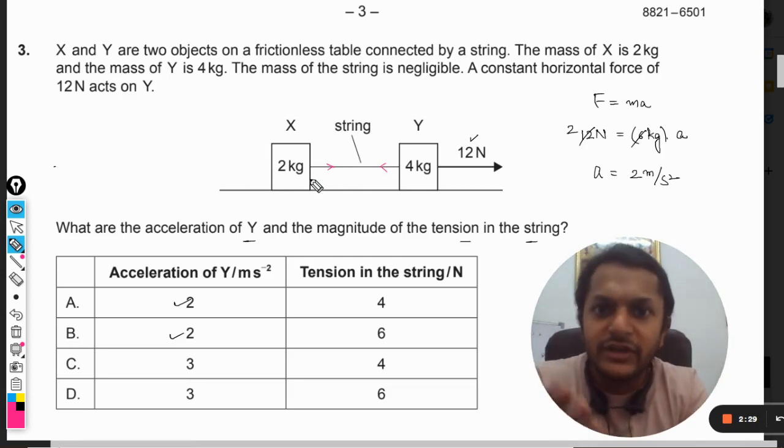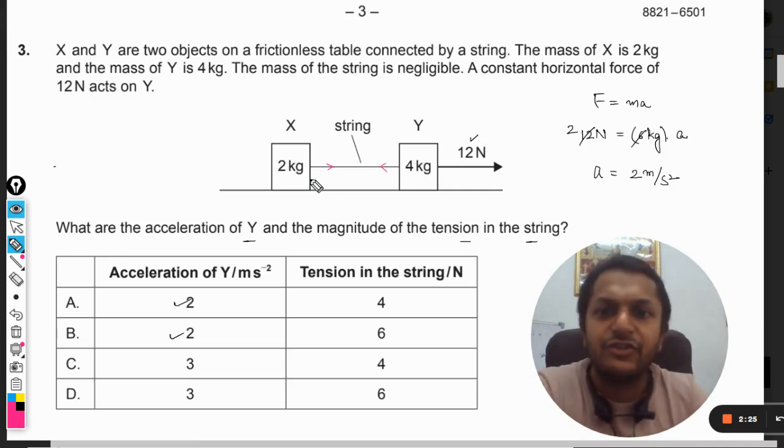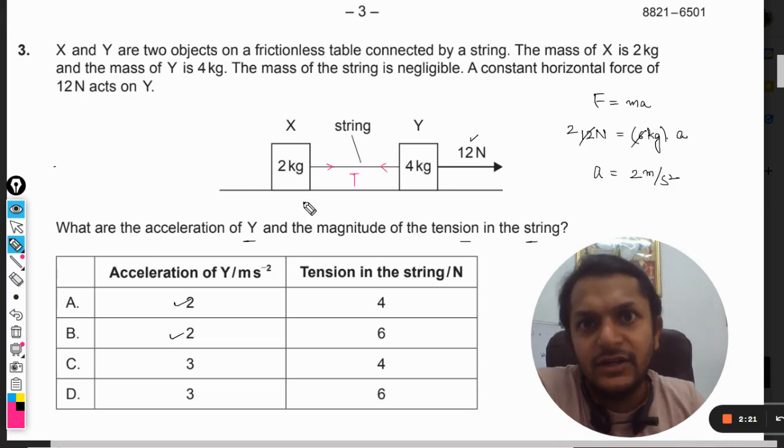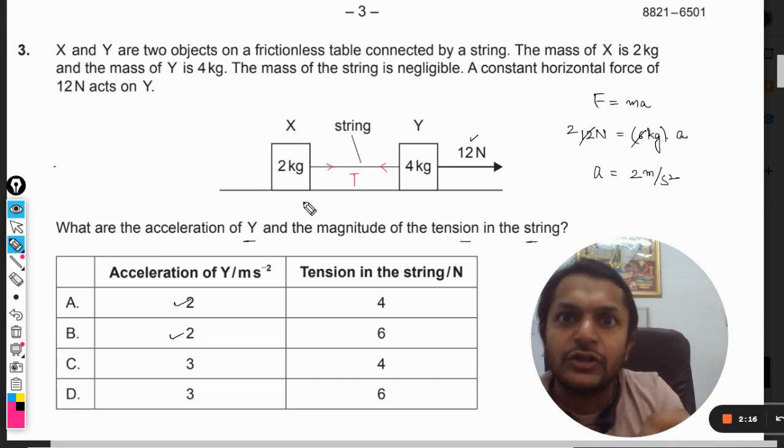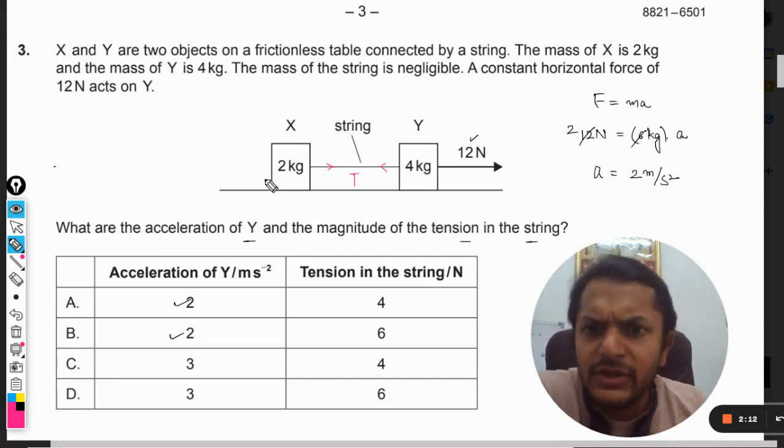So Y will say that this string is pulling me backwards, and X will say that the string is pulling me in the forward direction. According to X the string is pulling in forward direction, and according to Y the string is pulling in the backward direction. So this is how we show the tension. Tension force has ambiguous direction—it has a backward direction as well as the forward direction.